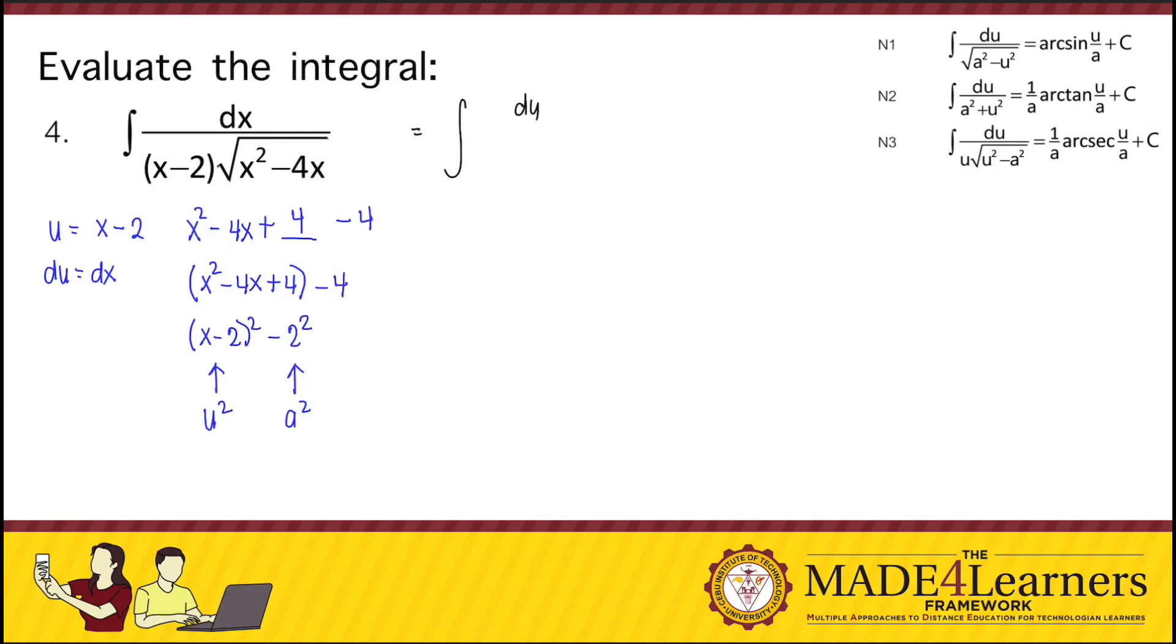So du over u times the square root of, remember that x squared minus 4x can be expressed this way. So we write that as u squared minus 2 squared. So since it now follows the pattern of N sub 3, we can now integrate. Our answer would be 1 over 2 arc secant, that's u over 2 plus c. In expressing our u in terms of x, we have 1 half arc secant of x minus 2 over 2 plus c.